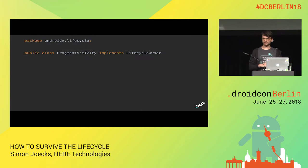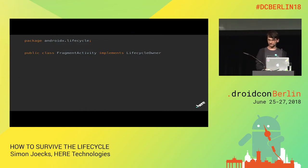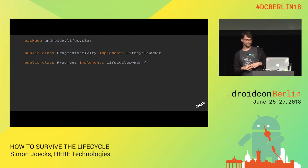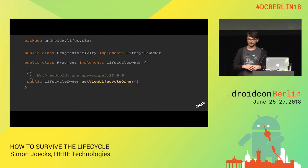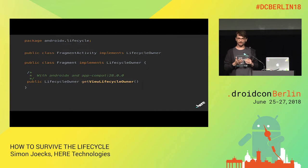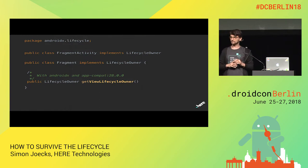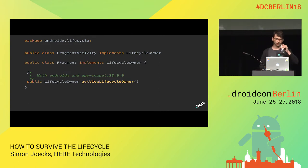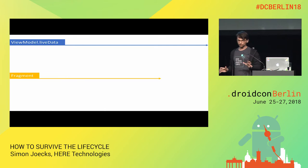There are three lifecycle owners you should know about. The first two are the FragmentActivity LifecycleOwner and the Fragment LifecycleOwner. The new one introduced at Google I/O 2018 is the View LifecycleOwner, and that's a particular one because it's a little bit different — it's not totally intuitive what it is doing and why it's there. This talk is mainly about putting awareness on this new object.